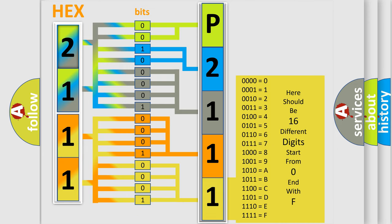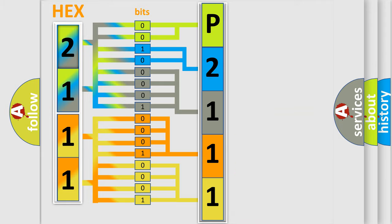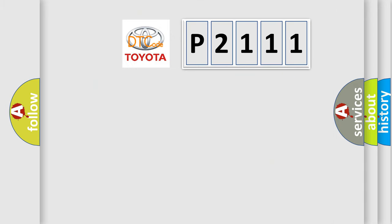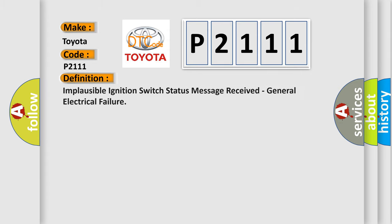We now know in what way the diagnostic tool translates the received information into a more comprehensible format. The number itself does not make sense if we cannot assign information about what it actually expresses. So, what does the diagnostic trouble code P2111 interpret specifically for Toyota car manufacturers? The basic definition is: Implausible ignition switch status message received, general electrical failure.